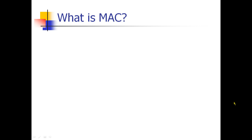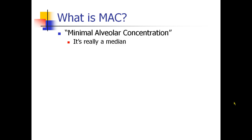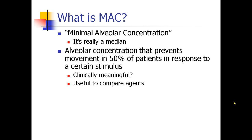We're going to start with a discussion of MAC. MAC is a concept that's been introduced to you almost from your first day of anesthesia training, and we should clarify exactly what this is. MAC — everyone says it is the minimum alveolar concentration. Really, it's a misnomer because it's a median. The MAC is the concentration of anesthetic agent that prevents movement in 50% of patients in response to a certain stimulus.